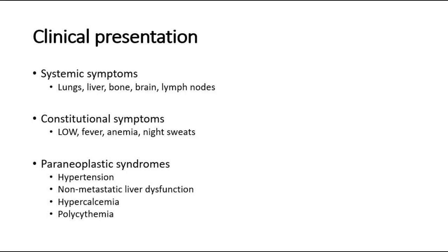Systemic symptoms occur if the cancer has metastasized. Metastasis to the lungs, liver — causing jaundice and yellowish discoloration of the skin — bone causing bone pain, and brain causing weakness may all occur. Lymph node involvement is also seen; around 30% of cases have metastasized to the para-aortic nodes at presentation. Constitutional tumor symptoms include loss of weight, fever, fatigue or palpitations, and night sweats.